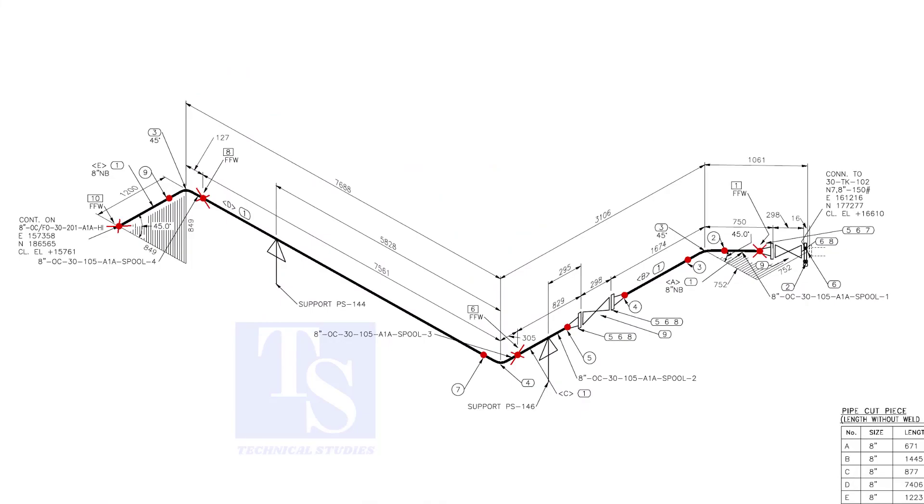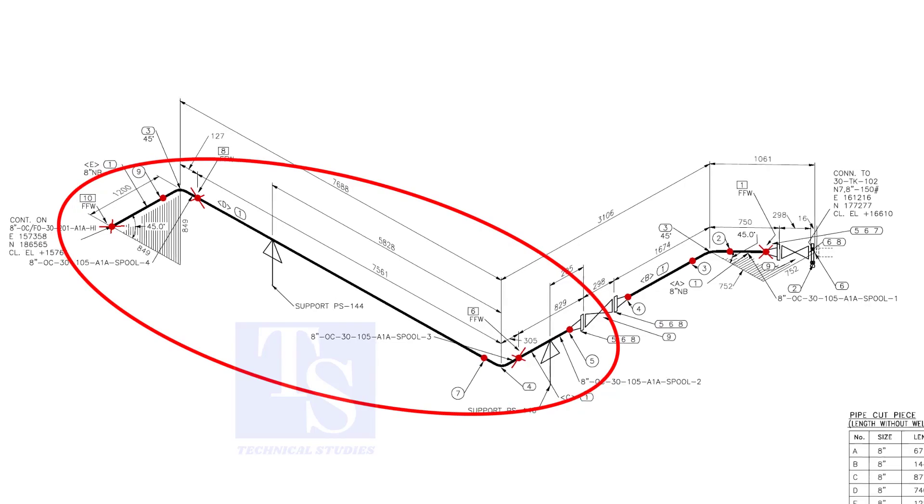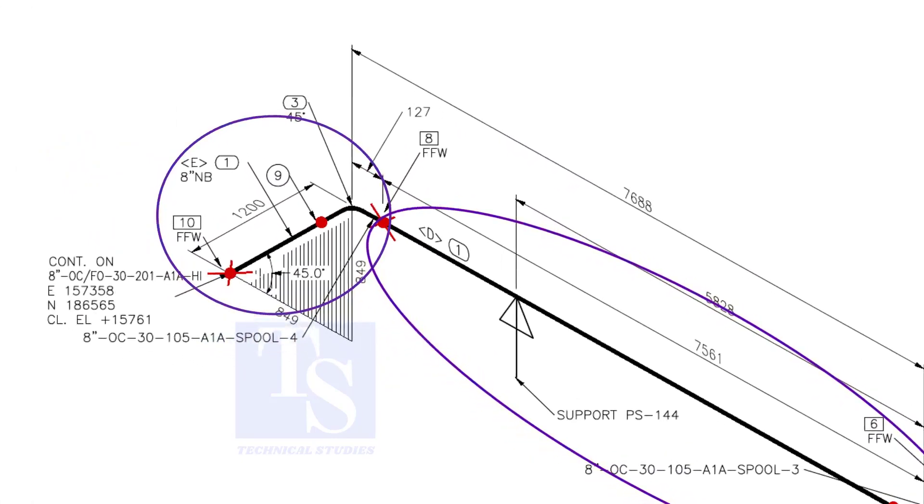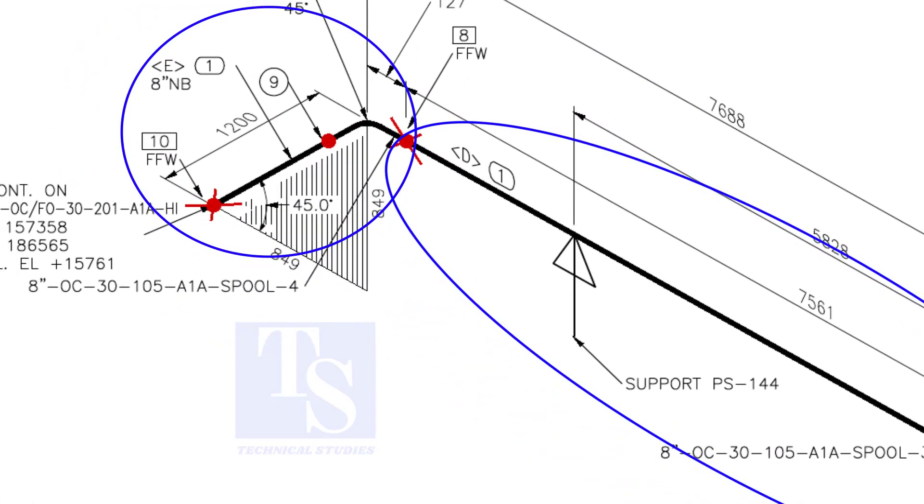We are going to fabricate this part of the piping. In this part of the drawing, there are three spools. This joint is FFW, which means Final Fit Weld. We will do the fit-up and welding at site.